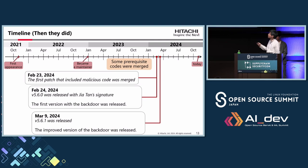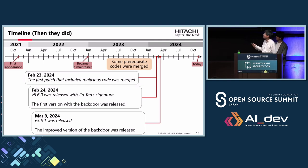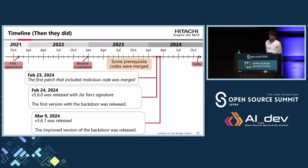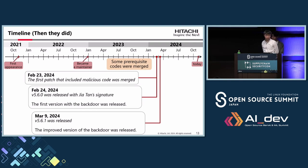After becoming a maintainer, Jia Tan served as an innocent maintainer for almost one year. But in February 2024, the first patch containing the malicious backdoor code was merged by Jia Tan. The next day, this code was released as version 5.6.0 — the first version with the backdoor. Two weeks later, version 5.6.1 was released, containing an improved version of the backdoor.